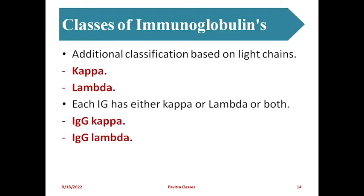Additional classification of immunoglobulins is based on the light chain. The heavy chain classification gives IgA, IgE, IgG, IgD, and IgM. In the light chain classification, there are kappa and lambda immunoglobulins. For example, immunoglobulin G can have kappa, lambda, or both - so there is IgG kappa and IgG lambda. These are the light chain immunoglobulin classifications.